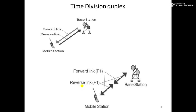In Time Division Duplex, the forward link frequency is the same as the reverse link frequency. Signals in each link are transmitted continuously in turns — just like a ping-pong game. The forward link means from base station to mobile station, and the reverse link means from mobile station to base station. In TDD, the forward link frequency is the same as the reverse link frequency.